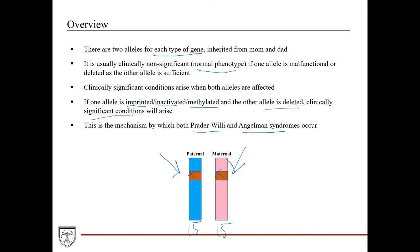These are the mechanisms by which Prader-Willi and Angelman syndromes occur. These diseases are particularly rare, but they're important and high yield for biochemistry and board exams because they illustrate these genetic concepts.